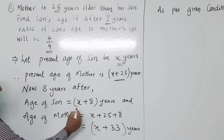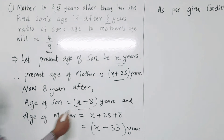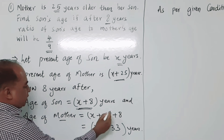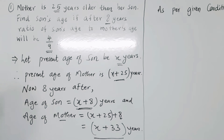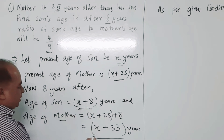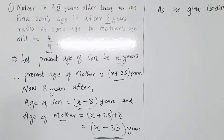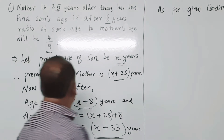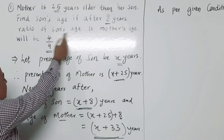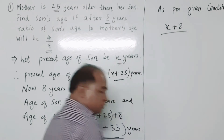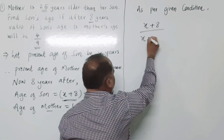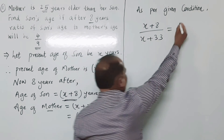After 8 years, the son's age will be x plus 8, and the age of mother will be x plus 25 plus 8, which equals x plus 33. So after 8 years, son's age is x plus 8 and mother's age is x plus 33. As per the given condition, the ratio of son's age to mother's age is 4 upon 9. So (x + 8) divided by (x + 33) equals 4 upon 9.